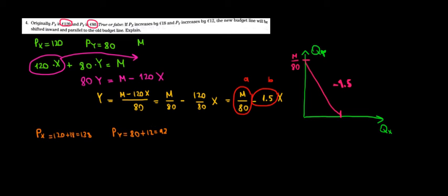Now let's draw the new budget line. Let's do the same math. Now we're spending 138 euros on X plus 92 euros on Y. And that's all the money that we're spending.